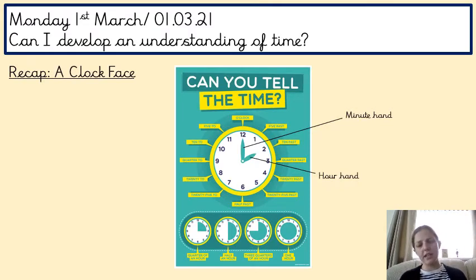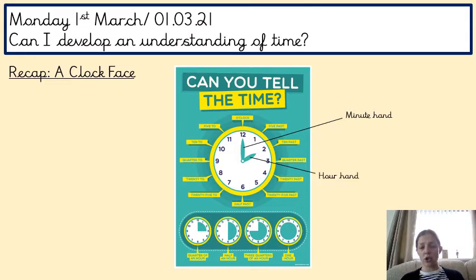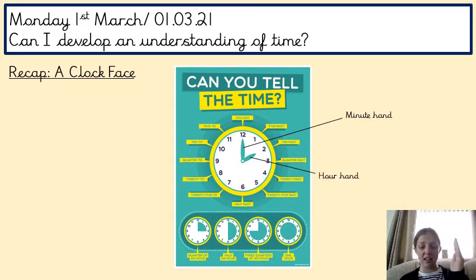We're going to quickly recap and revisit a clock face and revise what the different hands mean, and what is meant by the terminology: quarter of an hour, half of an hour, three quarters of an hour, or one hour. You have a large hand and a small hand, but we don't use those words when we tell the time — we use the phrases minute hand and hour hand. The minute hand is the longer of the two hands and tells you how many minutes past the hour. The hour hand is the small one, it points to the different numbers and tells you what hour it is. It moves a lot slower than the minute hand.